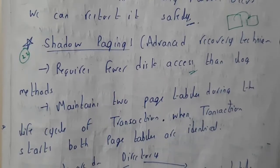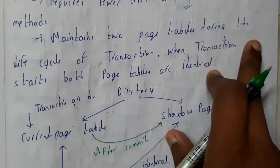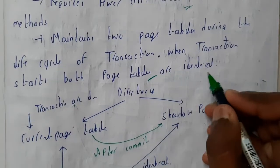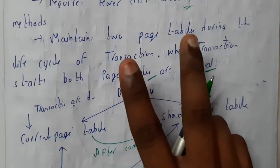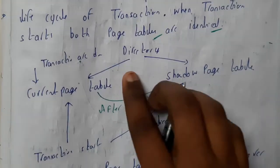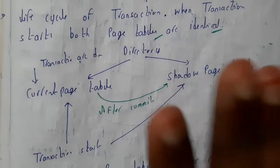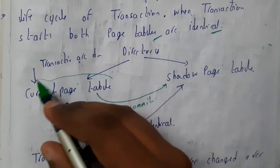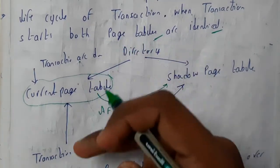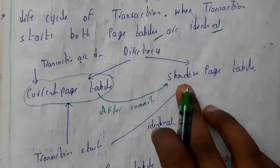Shadow paging maintains two different tables during the life cycle of a transaction. When the transaction starts, both page tables are identical. The directories hold two page tables: the current page table and the shadow page table. All inserts and updates are done in the current page table, and after committing, the data is copied to the shadow page table.